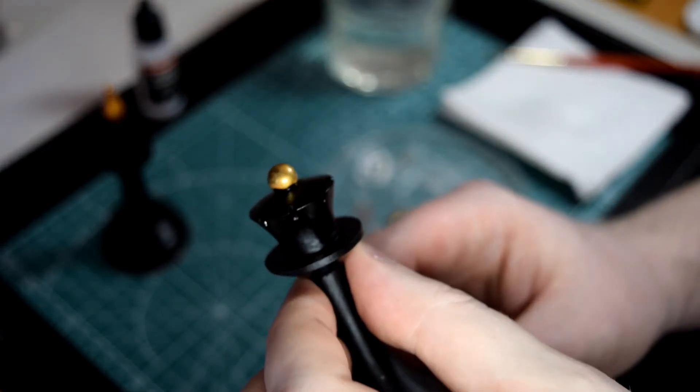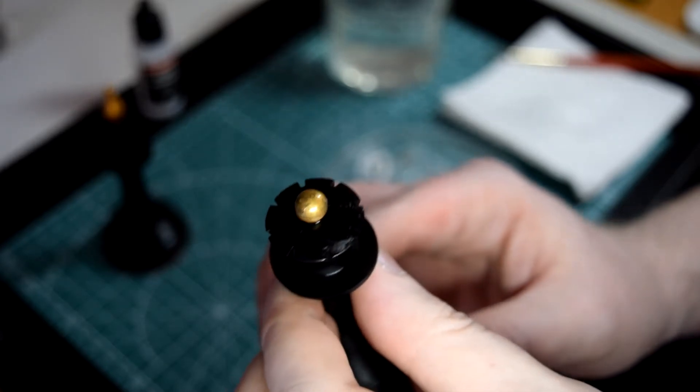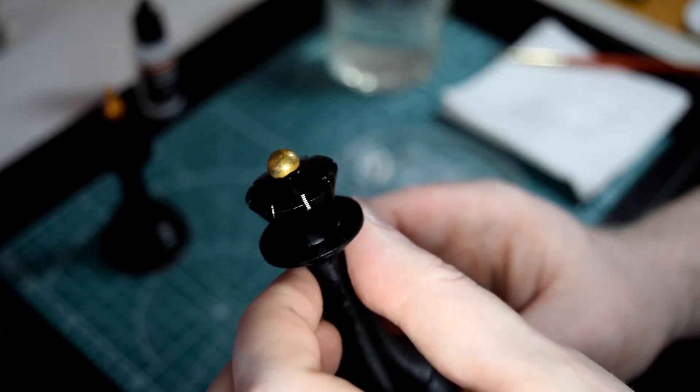You can see it's not opaque yet, the black is still showing through, but that's fine. It's better to be thin and paint it two or three times.